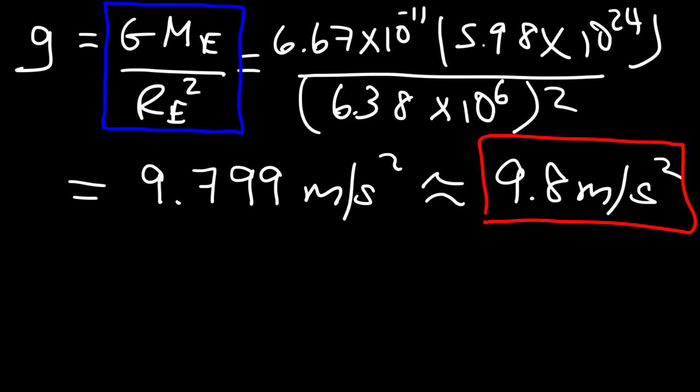And so this formula helps us to calculate the gravitational acceleration of any planet. It could be a moon, it could be a planet, it could be a star, like the sun. You can use this to calculate the gravitational acceleration of any object.